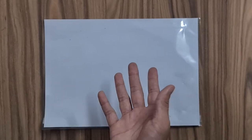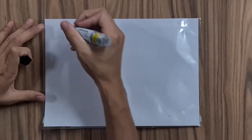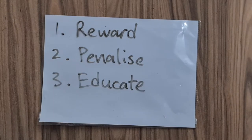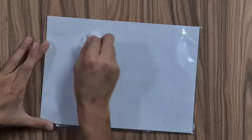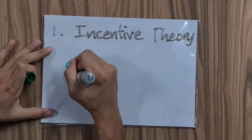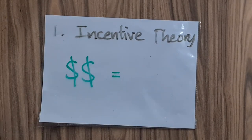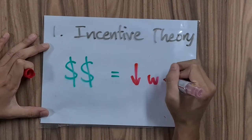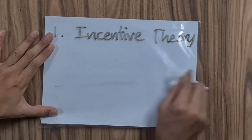Now that we know about this problem, we devised a way to help us solve food wastage in buffets. To give a brief overview, our solution comprises three parts: reward, penalize, and educate. Our first solution uses incentive theory — financial incentives, such as rewards and discounts, to motivate a specific behavior, which in this case is wasting less food.